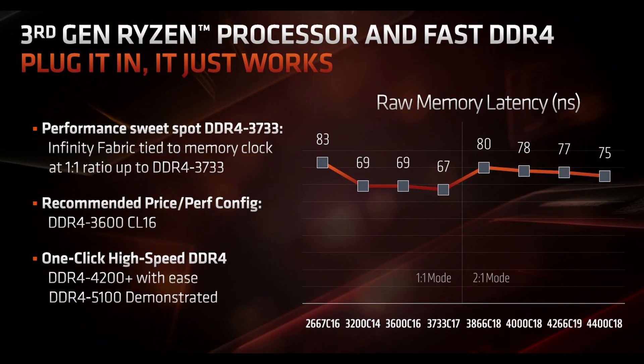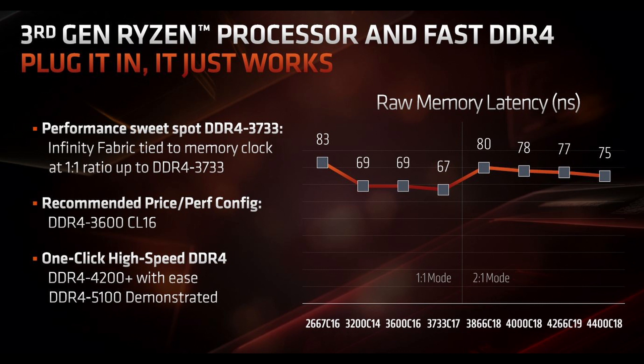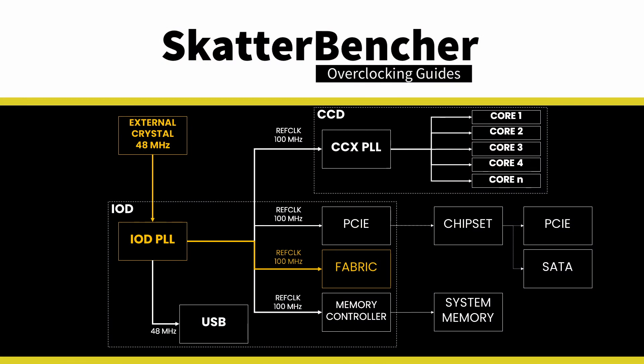In asynchronous mode, the memory controller operates at half the frequency of the system memory, and the fabric clock also runs below system memory frequency. This results in a performance penalty. The size of the penalty is application-specific and depends on the final memory frequency — a sufficiently high memory frequency can overcome the performance penalty from running in asynchronous mode. Because the memory overclocking capabilities of Ryzen Threadripper are fairly limited, not least because of the four memory controllers, we prefer to run in synchronous mode.